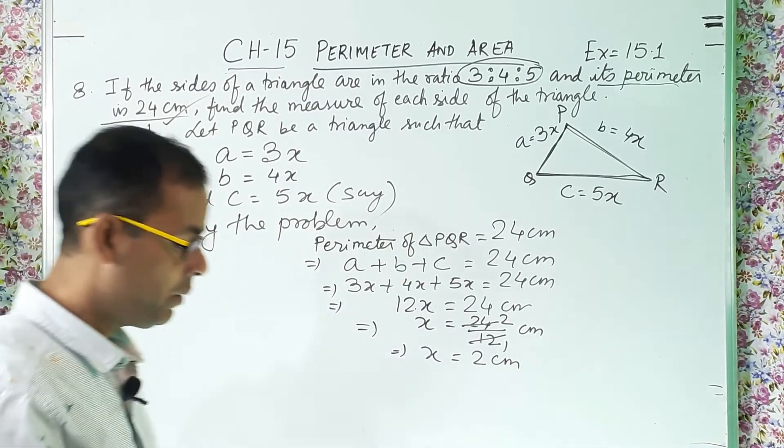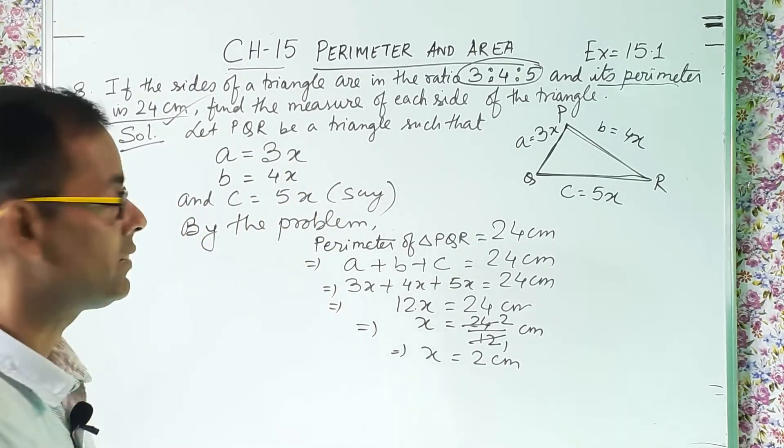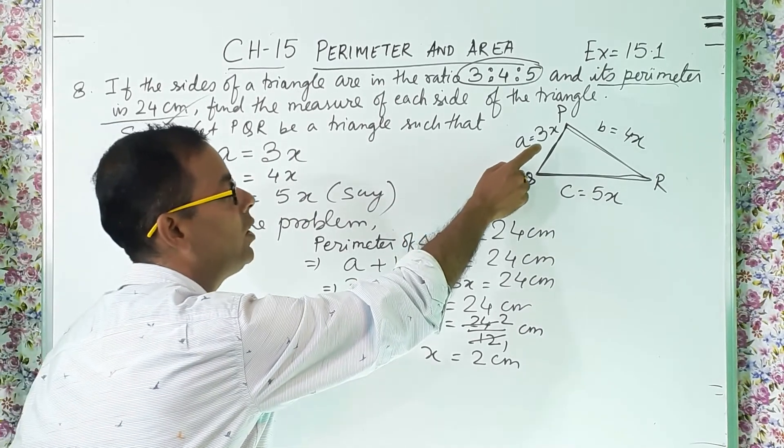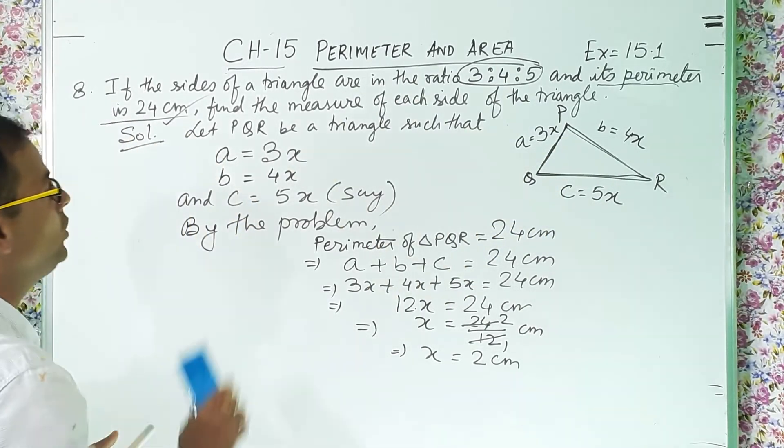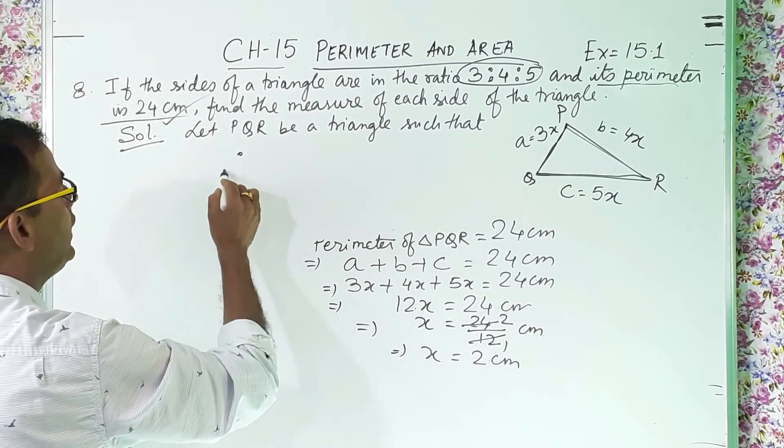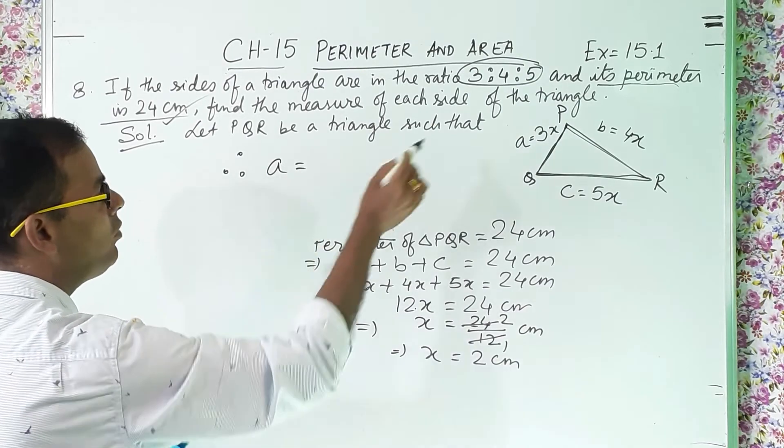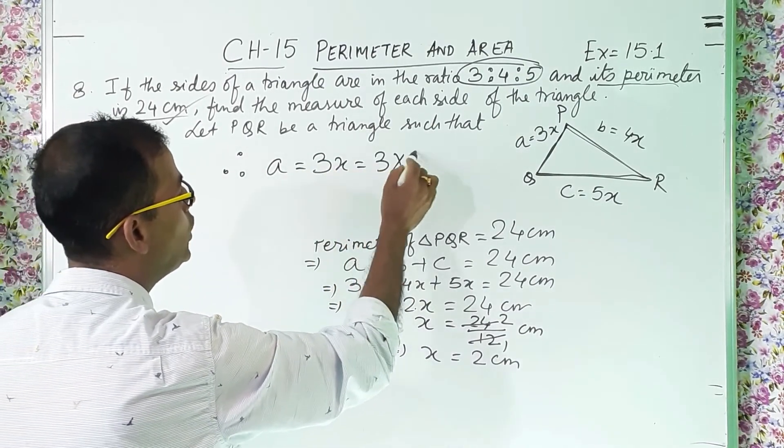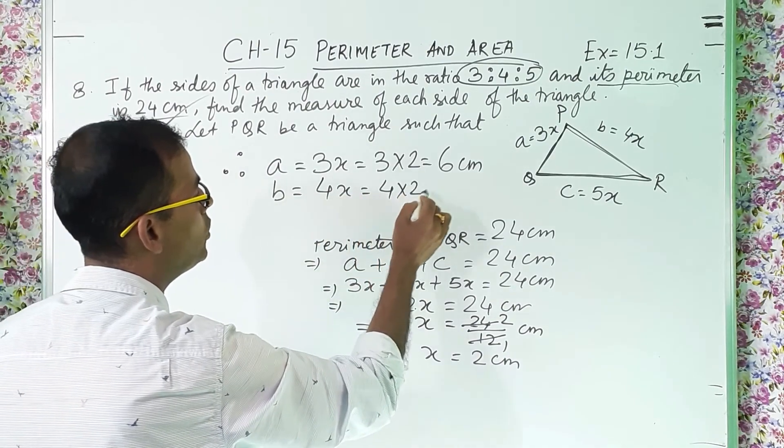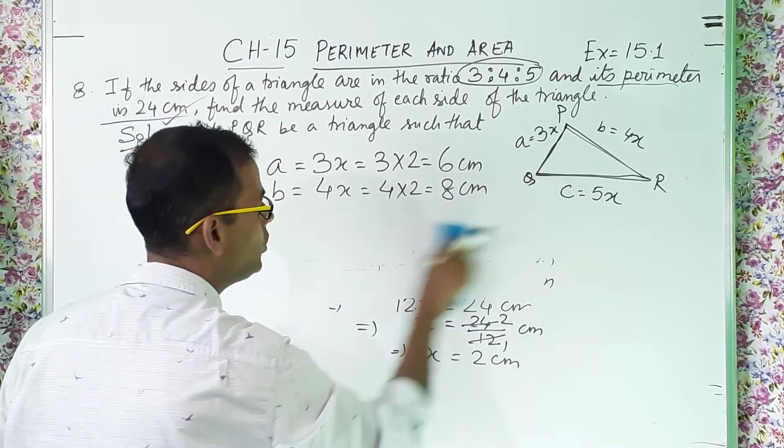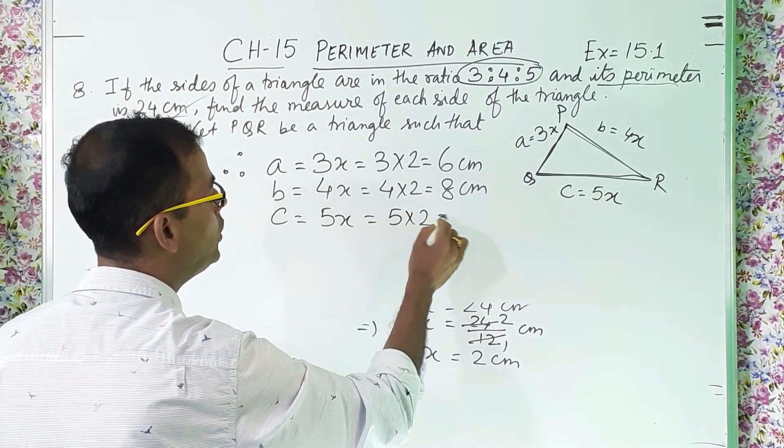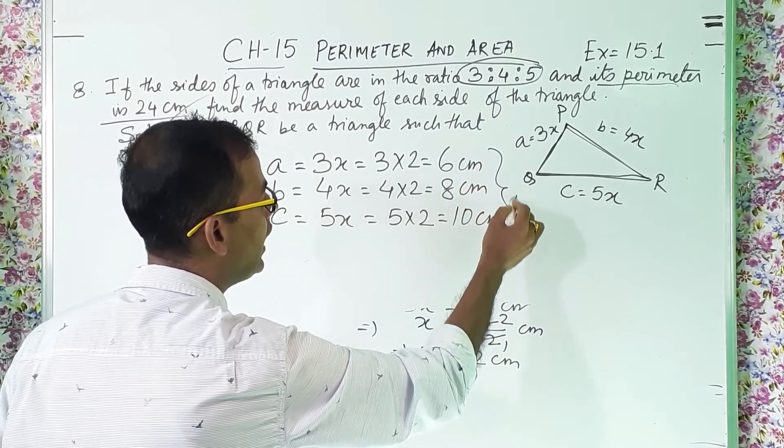But they are not telling us to find out the value of x. They are telling what? Find the measure of each side. They are telling us to find out what is the measurement of the first side, second side and the third side. Now how we will do? What we will now write? Therefore what? Small a. Small a, what we took? 3x. So what we will write? 3 into 2. How much? 6 centimeter. Small b, that is 4x. So 4 into 2. How much? 8 centimeter. And the last one is what? Small c. Small c is what? 5x. So 5 into 2. So how much? 10 centimeter. And these three are the answers.